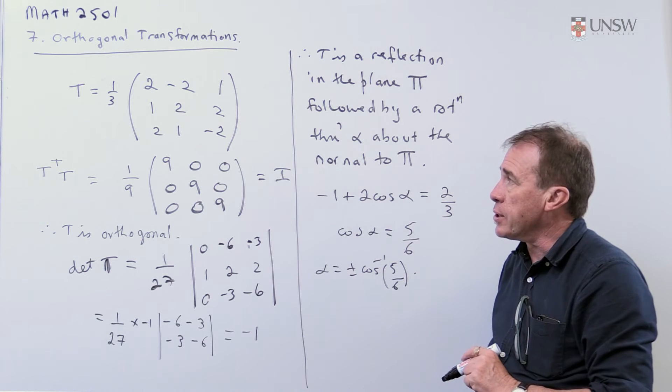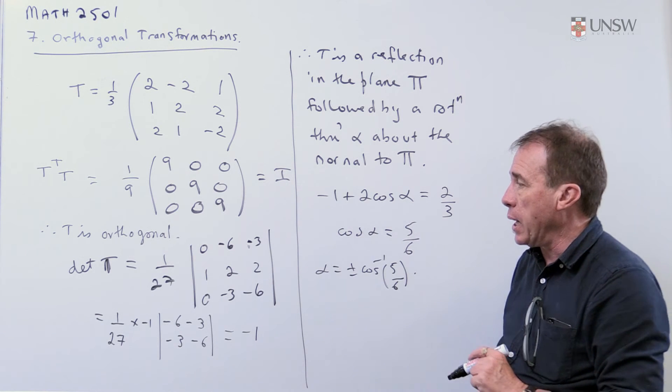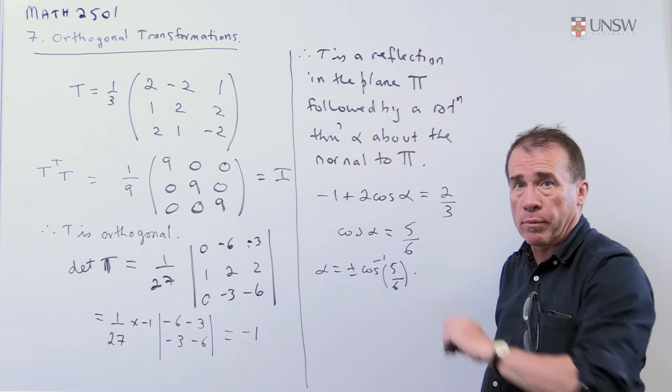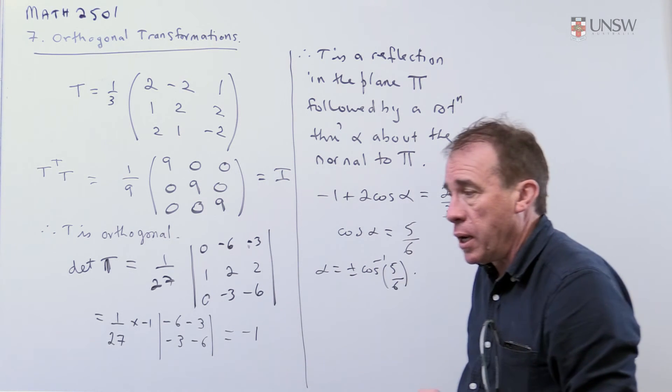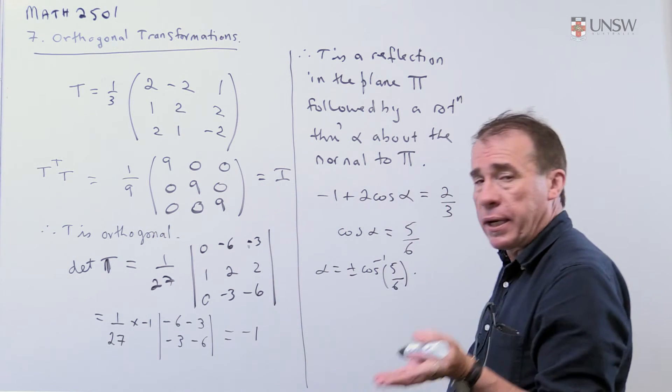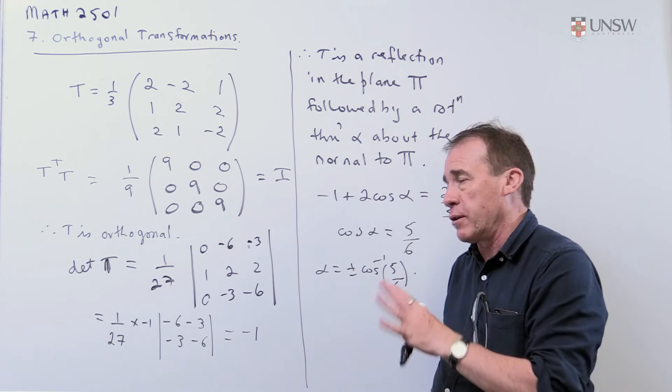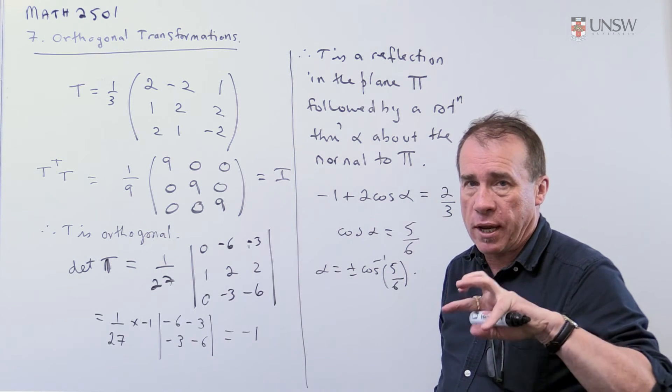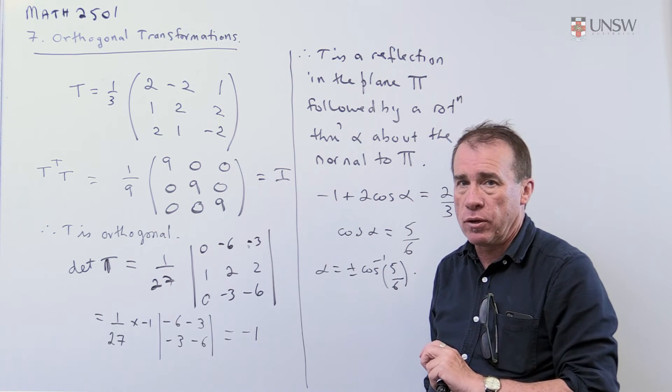So there are the angles. So the last bit is we need to find the plane of this plane capital Pi, the plane of reflection. Now, to get the equation of a plane in Cartesian form, it's got to go through the origin. So all I need to know are what the three coefficients are, and that gives me the normal.